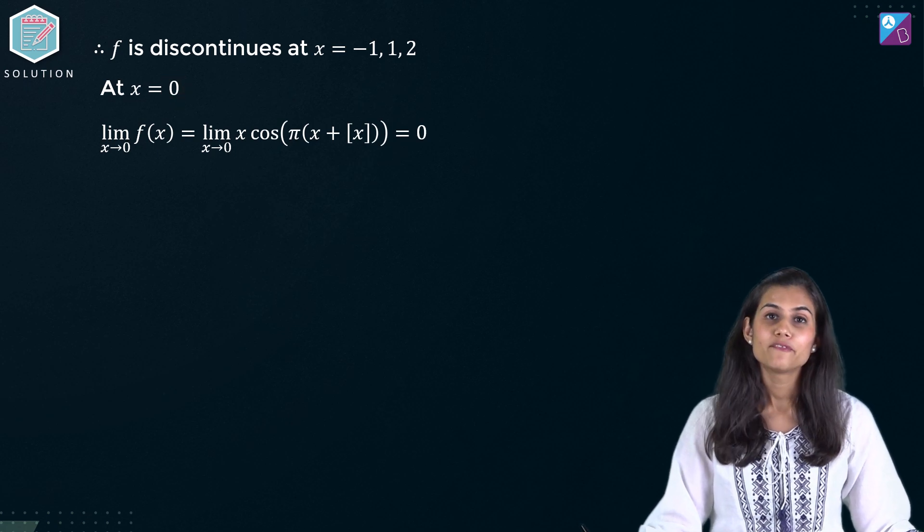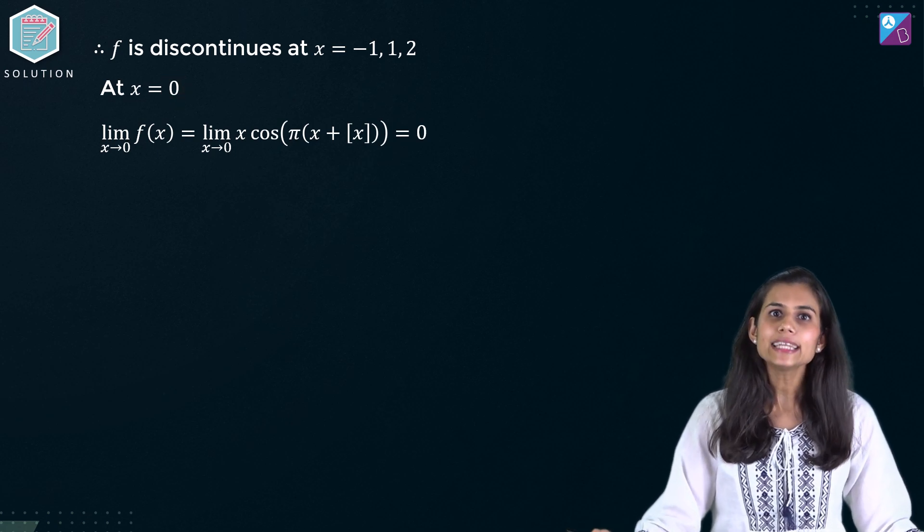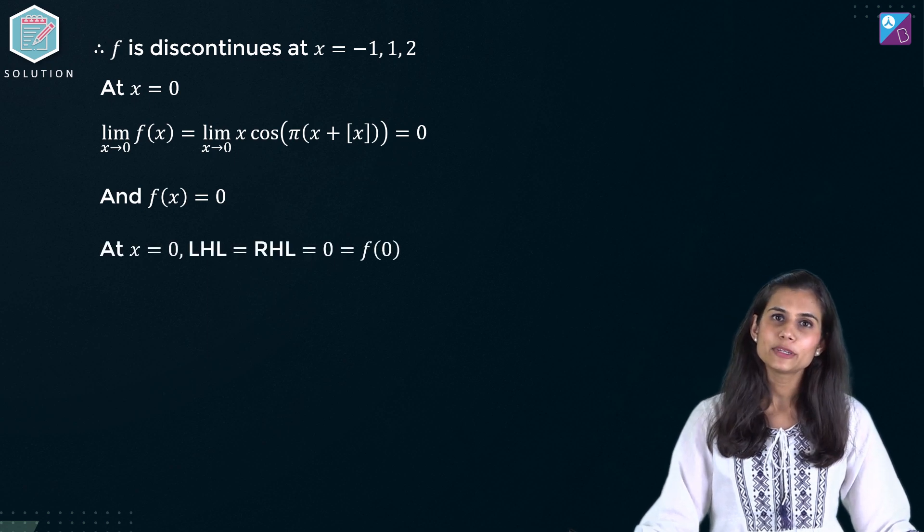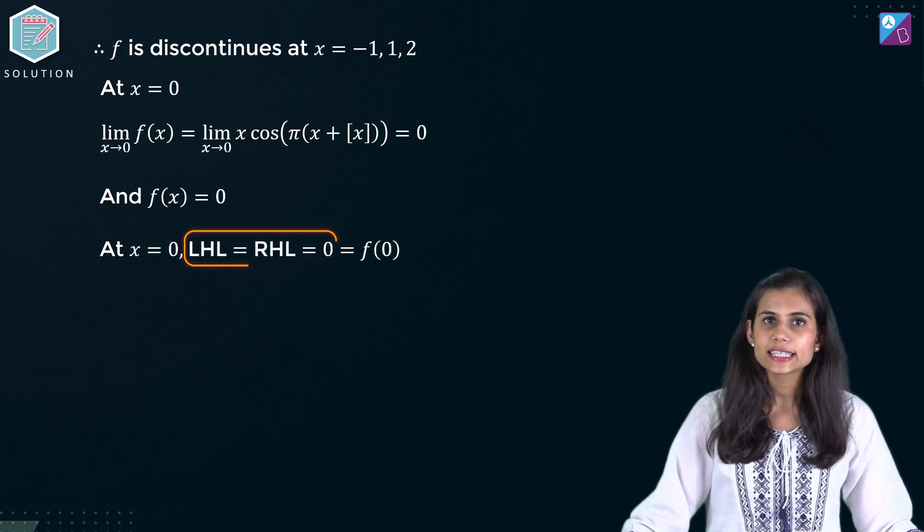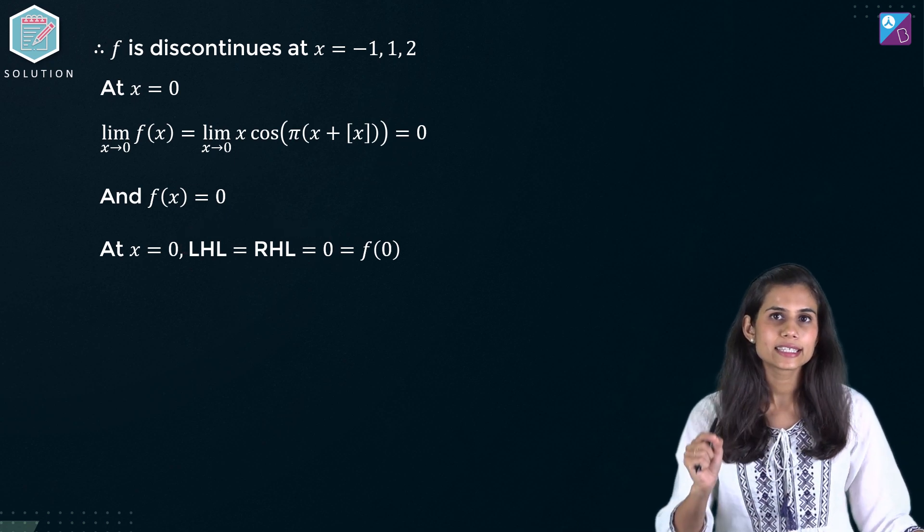But at 0, the value of left hand limit will be minus 0 which is 0 and the value of right hand limit will also be 0. So LHL is equal to RHL at 0. So the limit of the function is existing at 0.